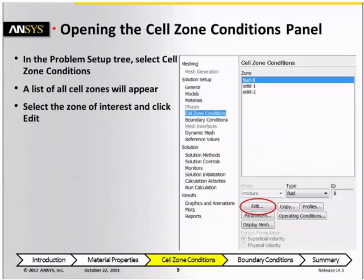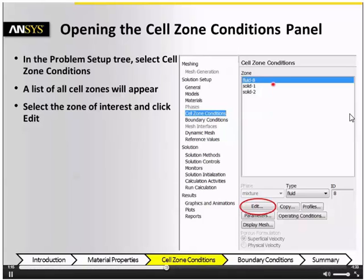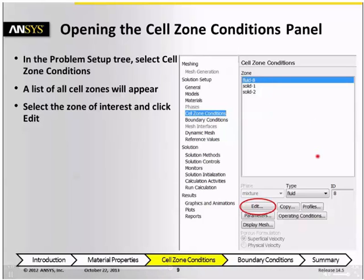Defining cell zone conditions is easy. You just select cell zone conditions in the problem setup tree, and then you select a zone from the list of available cell zones, tell Fluent whether it should be a fluid zone or a solid zone, and click Edit.